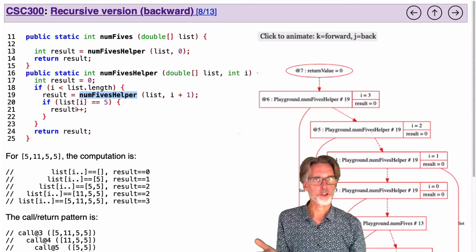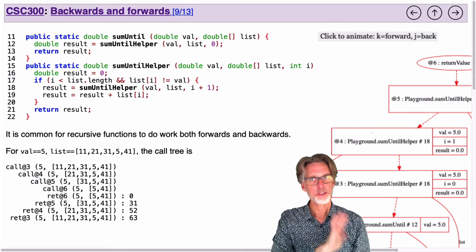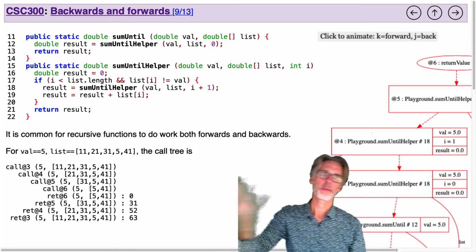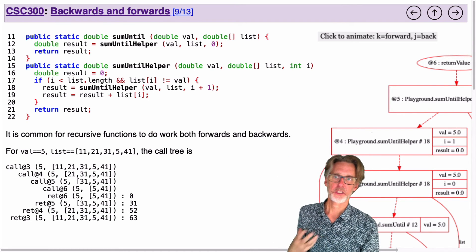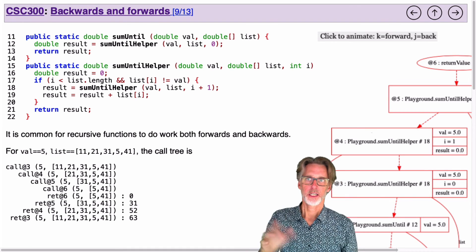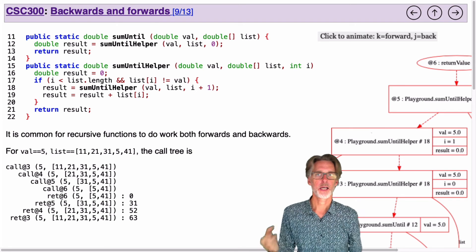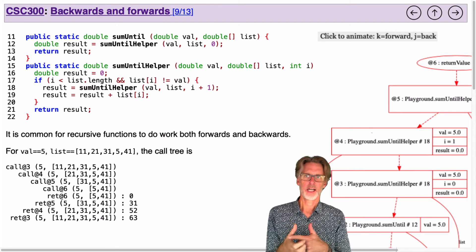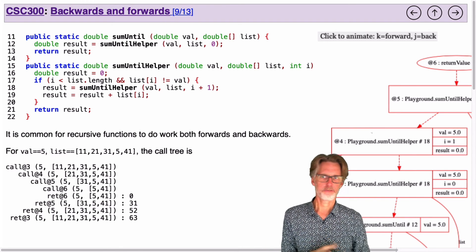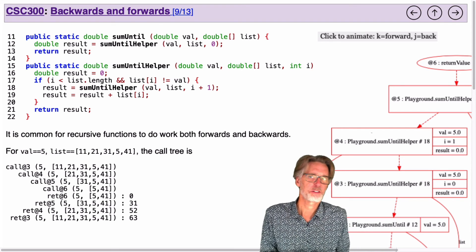Of course, recursion is general, and we can actually do computation both going forwards and going backwards. And to give you some exercise on this, here is a function which I invite you to look at by yourself. It's called sumUntil. And what it's going to do is add all of the numbers until it finds a five. This is just an arbitrary thing I made up, but all of the numbers up to a five.